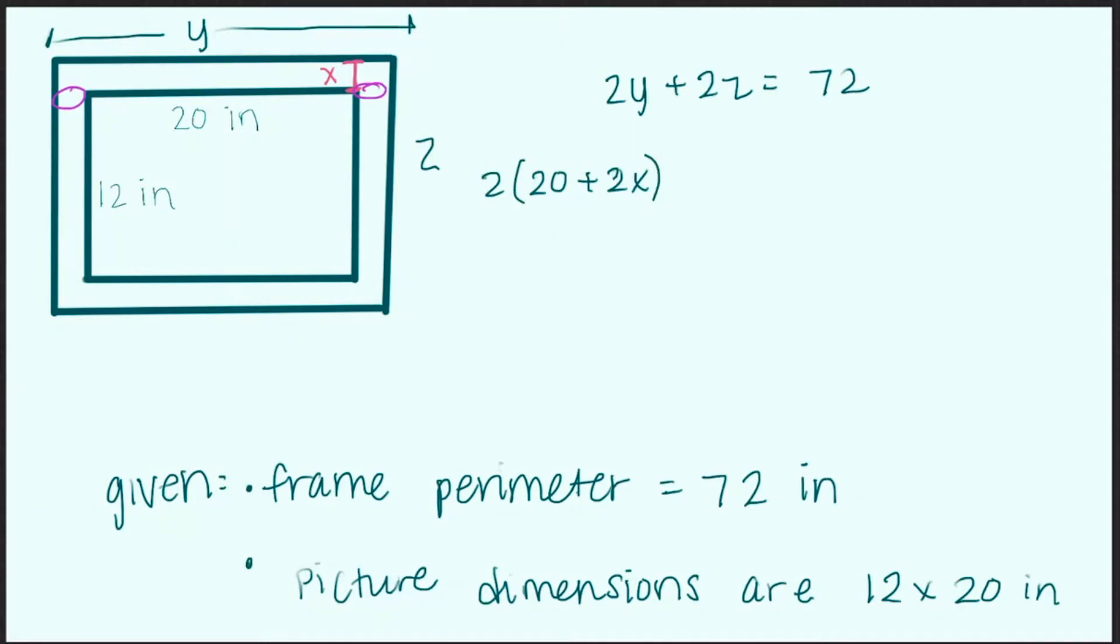We have two of those sides, and then our z side, we have two z sides, it's just 12 plus 2x. That would be the length of that frame side that we call z.